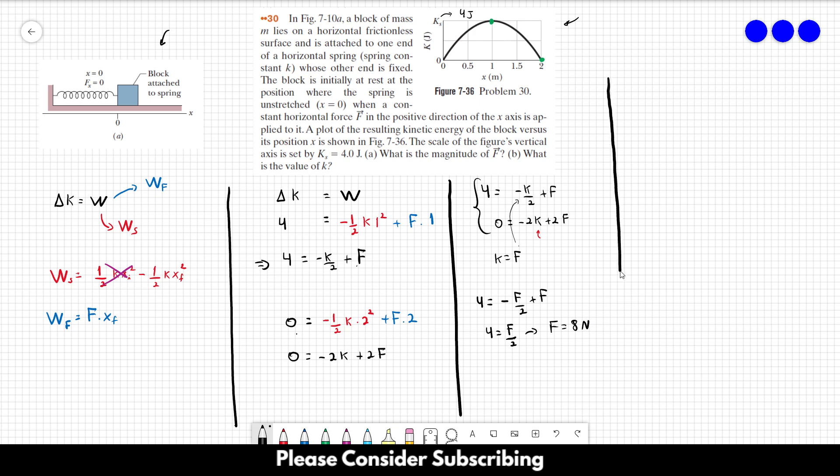So that's the answer of letter A. The magnitude of F is 8. And we already know that K is equal to F. So K is equal to 8 newtons per meter. Just take care of the units here, because this is just the number that is the same, not the same unit. So this is the answer of letter A and this is the answer of letter B.